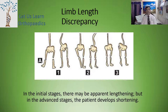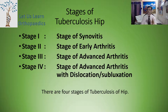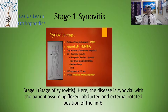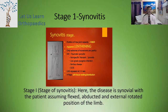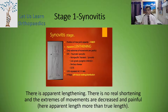Coming to the limb length discrepancy: in the initial stages there may be apparent lengthening, but in the advanced stages the patient develops shortening. There are four stages described: Stage 1 — stage of synovitis; Stage 2 — stage of early arthritis; Stage 3 — stage of advanced arthritis; Stage 4 — stage of advanced arthritis with either subluxation or dislocation. In Stage 1 synovitis, the disease is synovial and the patient assumes a flexed, abducted, and externally rotated position. There is apparent lengthening — the apparent length is more than the true length. The extremes of movement are decreased and painful.